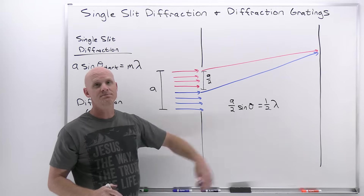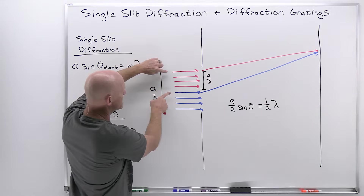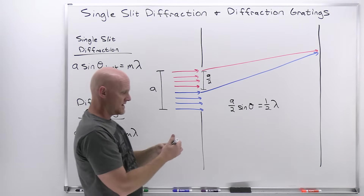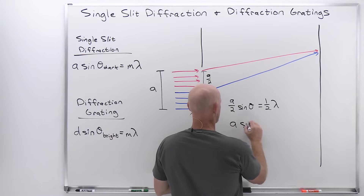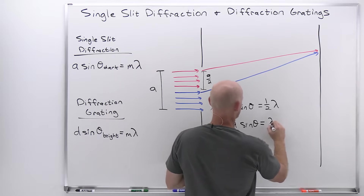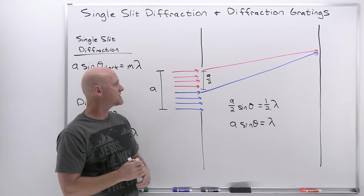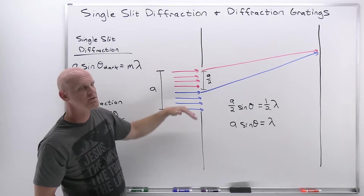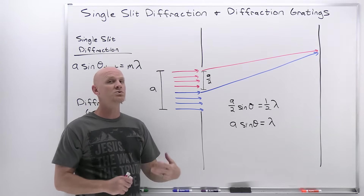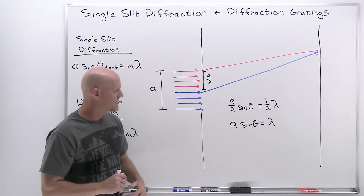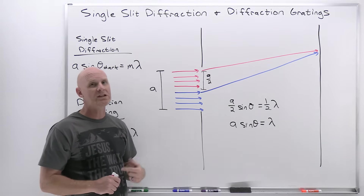If this condition is met, we will get destructive interference between every pair. Rearranging, we get A sine theta equals lambda. Let's break this up a little further. Instead of splitting the slit into two regions, we always want to split it into an even number of regions, so we can always pair up individual light waves.